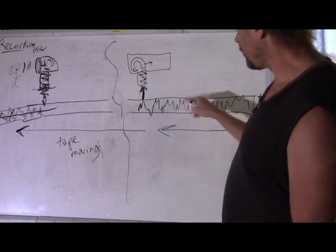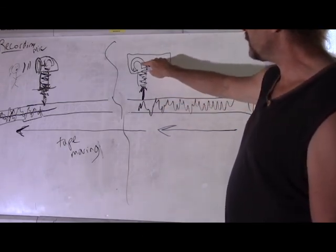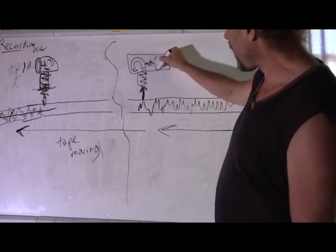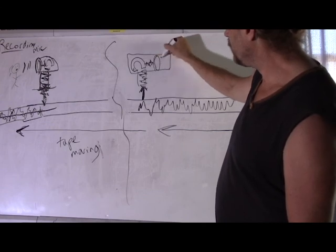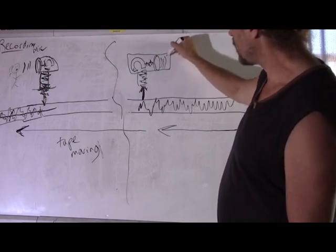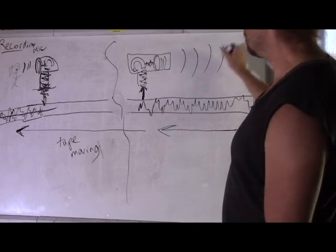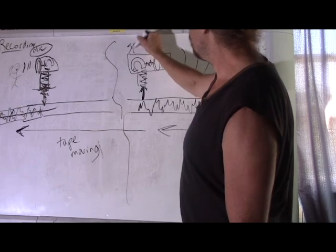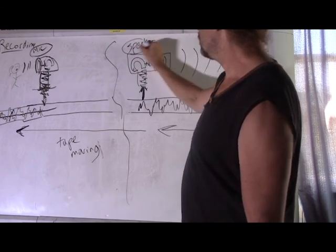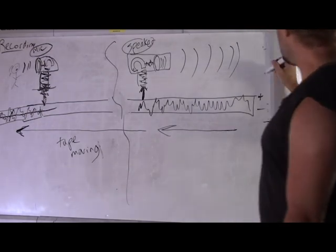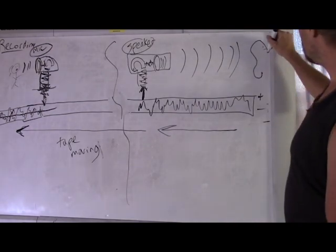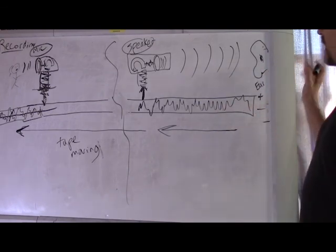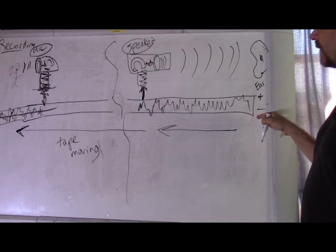The signal on the tape is going back to a magnet that makes the same pattern actually move the diaphragm back and forth. And that's a speaker. So here the diaphragm is inside a microphone. Here the diaphragm is part of the speaker. And boom. And let's see if I can draw an ear. That's an ear. And now we hear what was recorded.